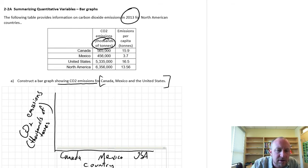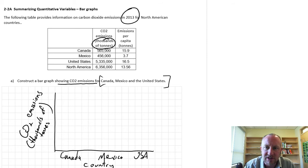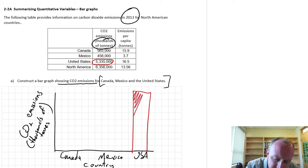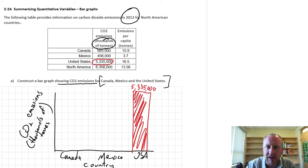Now when we're putting the data onto the bar graph, I always find it's easier to start with the largest value first, and then each subsequent value you can sort of scale it according to that largest value. So for example, now the US here is our largest at 5,335,000 tons of CO2 emissions. So I'll just make that as large as my y-axis will permit. So there's my value for the US, and not essential, but it's sometimes helpful if you want to also include the data point as a label, just to make it that much more clear.